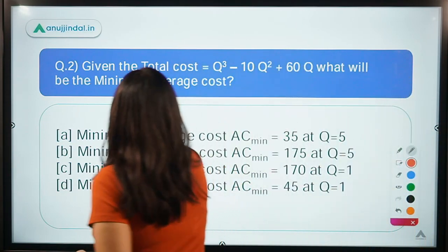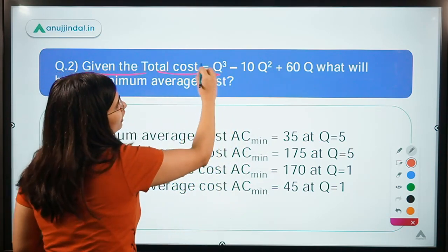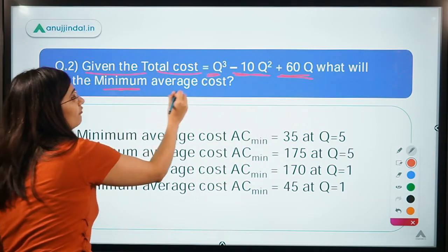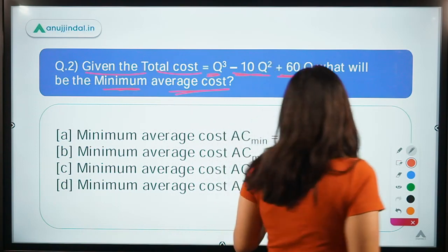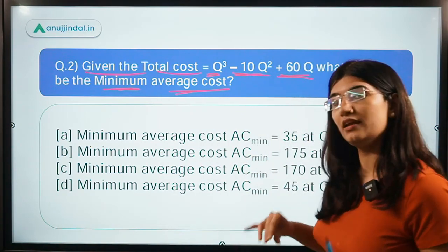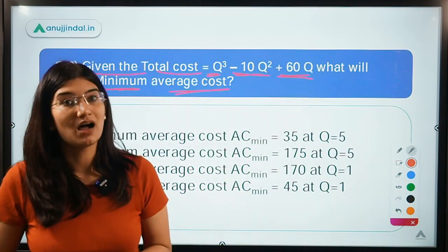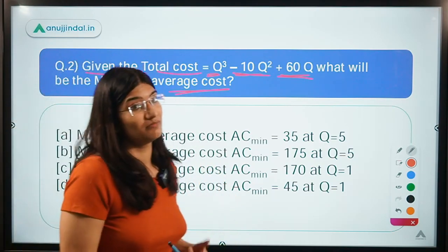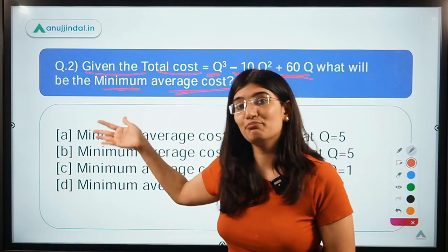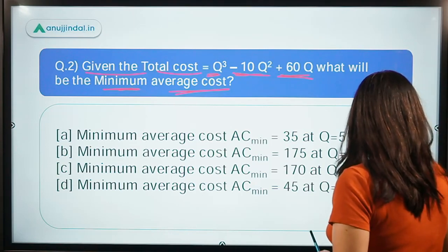The next question says: given the total cost TC = Q³ - 10Q² + 60Q, what will be the minimum average cost? Please go through the options and let me know in the chat box. We are going to solve this numerically. This question is important because it was part of a past year question paper — such questions on minimum cost curves do come up.